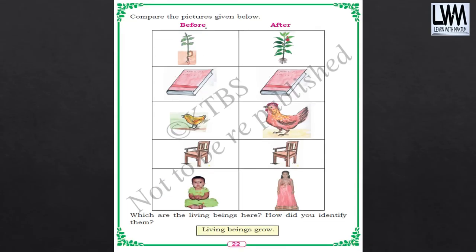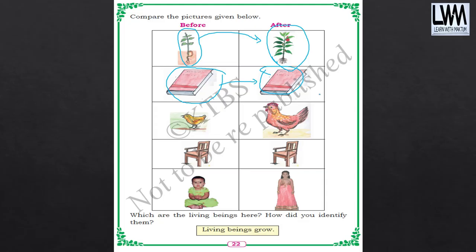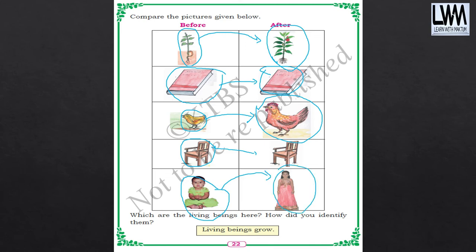Now we need to compare the pictures given here. If you see here, this was a small plant — now it has grown. So the plant has grown. If you see the book, any changes happened? No, it has not grown — it is the same. Earlier it was a small chick and now it has grown into a hen. And here the chair — any changes you observed? No, it is the same. And here there was a child — a baby child, now become a big child. So by this we can say that living things grow, non-living things don't grow.